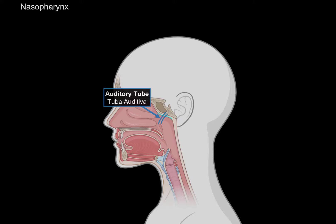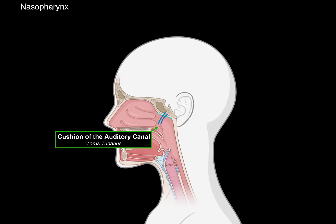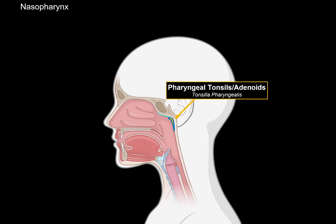So that's the tuba auditiva. The point where the auditory tube opens into the pharynx is called the ostium pharyngeum tubae auditivae, which literally translates as the opening of the auditory tube. Here you'll have cartilage protruding above the opening called the torus tubarius, or cushion of the auditory canal, as well as a small groove behind the auditory tube called the pharyngeal recess. We also have tonsils in the nasopharynx: the pharyngeal tonsils up here — also called the adenoids — which can sometimes be inflamed and enlarged and block the auditory tube. And another tonsil called the tubal tonsil, located behind the auditory tube.